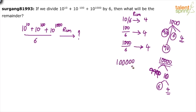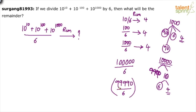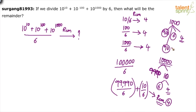Similarly, for 1 lakh divided by 6: 99,990 is divisible by 6 — since 90,000, 9,000, 900, and 90 are all divisible by 6 — leaving 10. When you divide 10 by 6, the remainder is 4. So the point is, for any power of 10 with two or more zeros at the end, you always get remainder 4 when divided by 6.